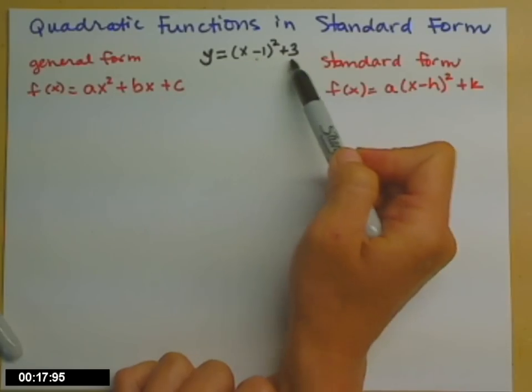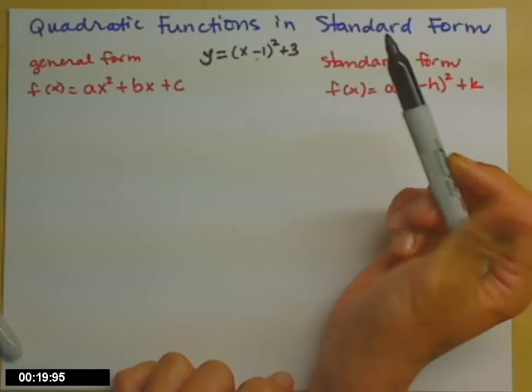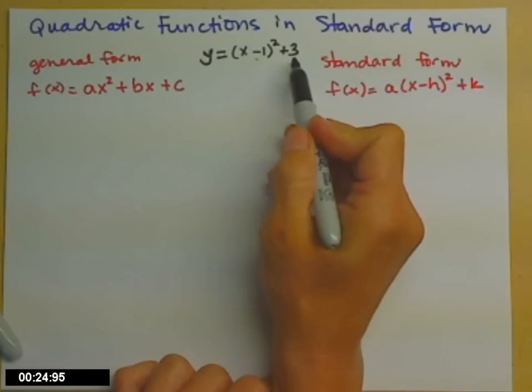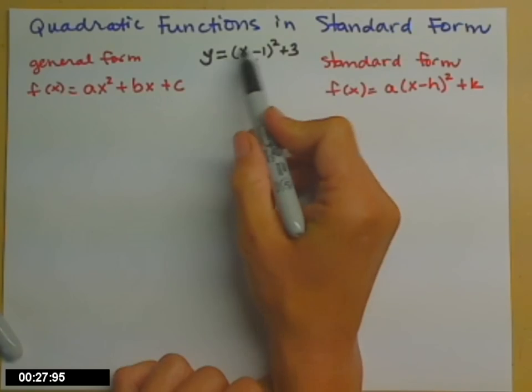The minus 1 tells us it's right 1. The plus 3 tells us it's up 3, which is great if it comes to us in that nice, tidy form. This is called the standard form. If, however, it's all multiplied out,